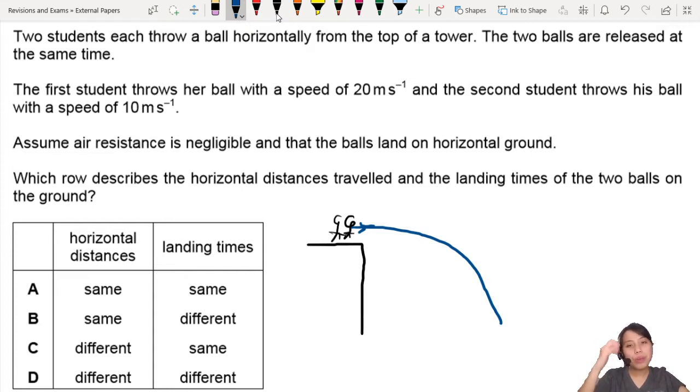The first student throws a ball with a speed of 20 meters per second. Let's call this 20 meters per second. And the second student throws a ball with 10 meters per second. It's much smaller horizontal velocity.